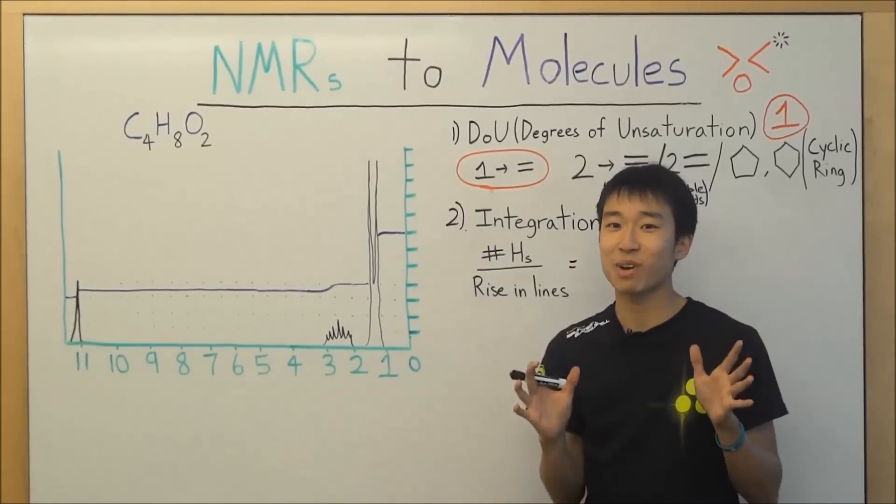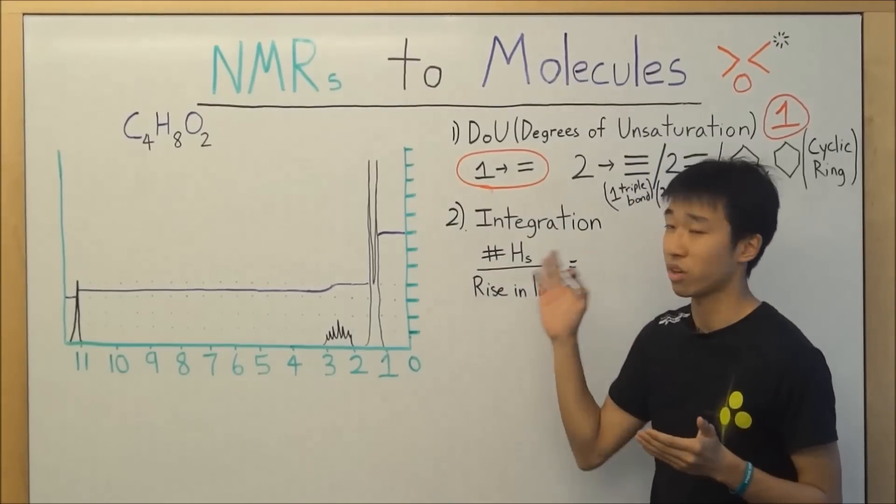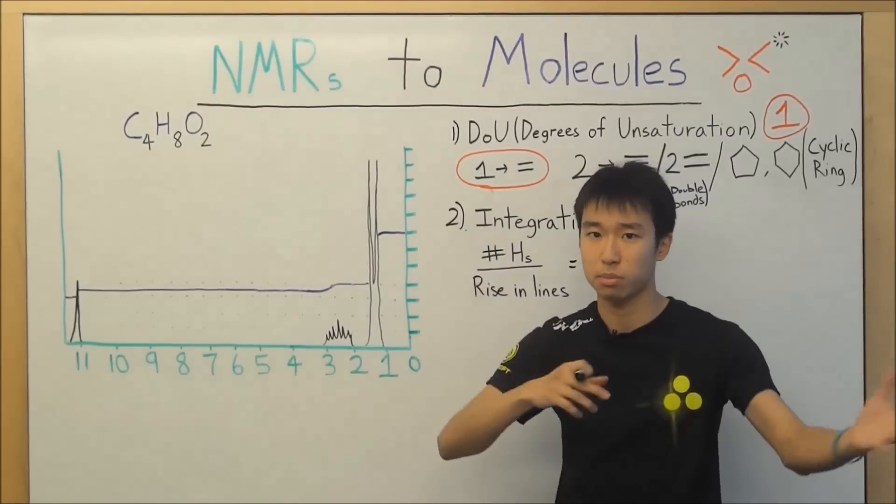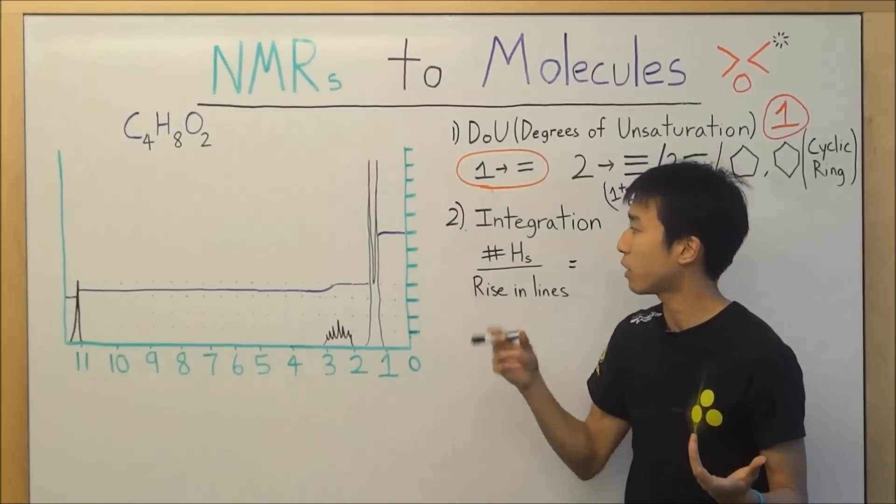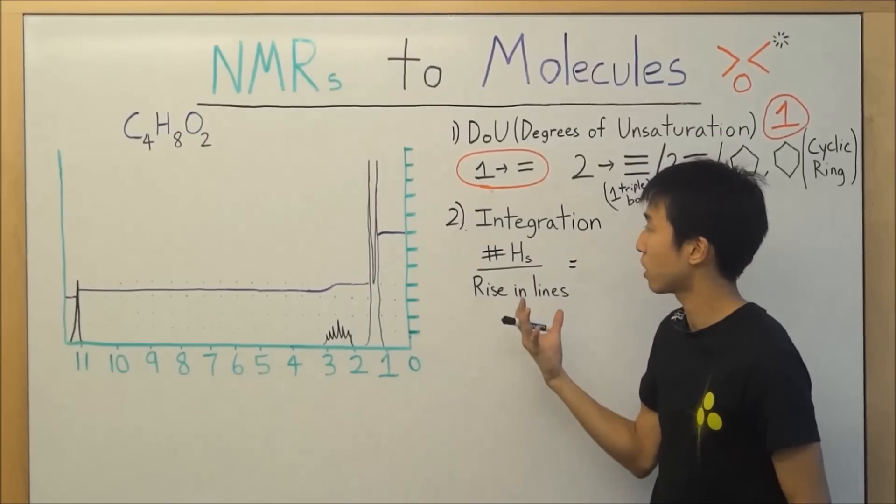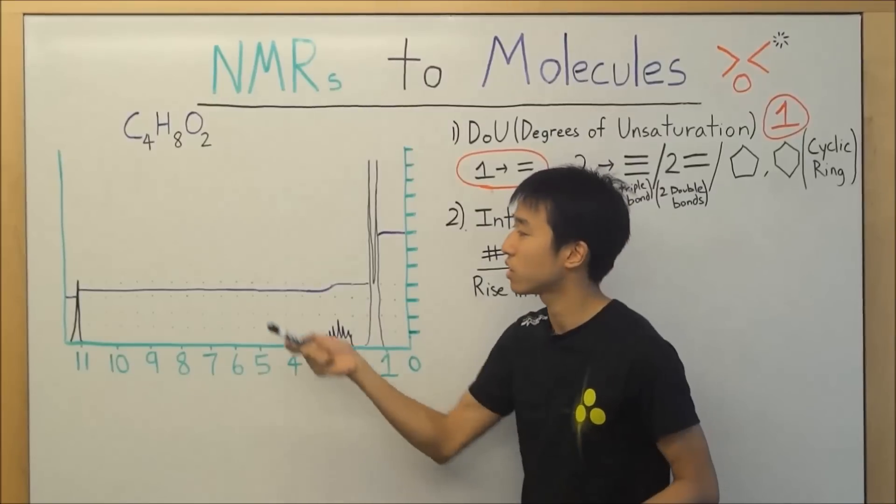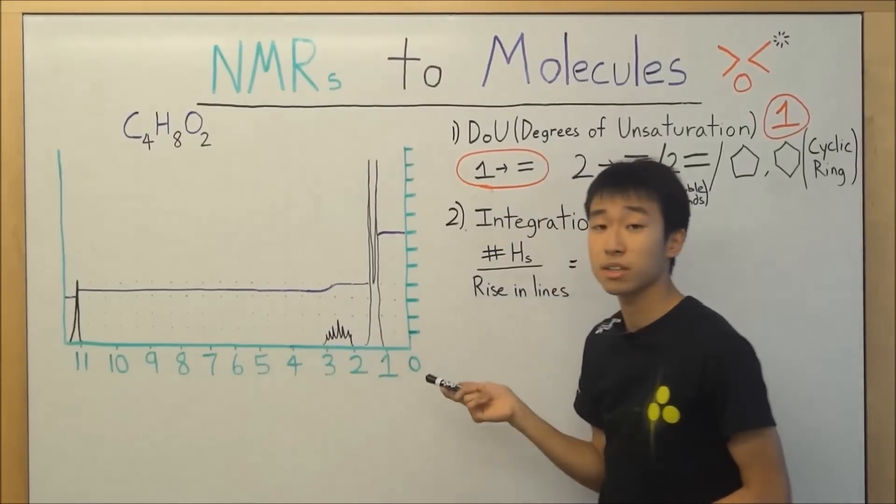So the next part to figuring out this NMR puzzle is to do integration. Because when you try to do a puzzle, you need to find all your puzzle pieces and put them together. Well now we're going to get our puzzle pieces. And what I mean is that by doing integration you can figure out how many hydrogens are represented by each peak.